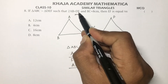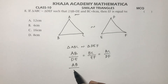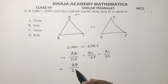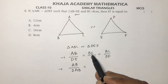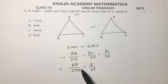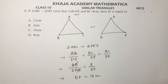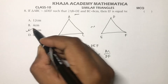Since DE = 2·AB, substituting: AB/(2·AB) = BC/EF. AB cancels on both sides, so 1/2 = 8/EF. Cross-multiplying: EF = 8 × 2 = 16 cm. The correct option is C.